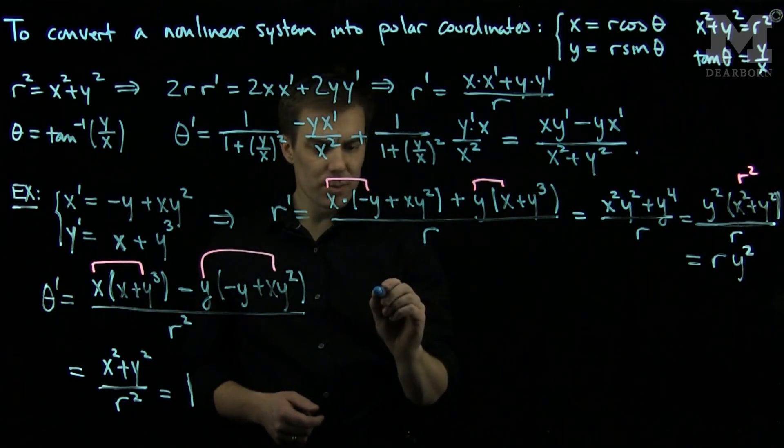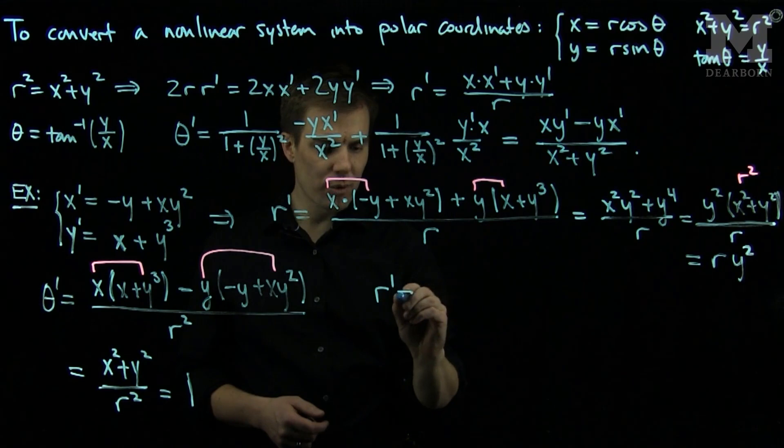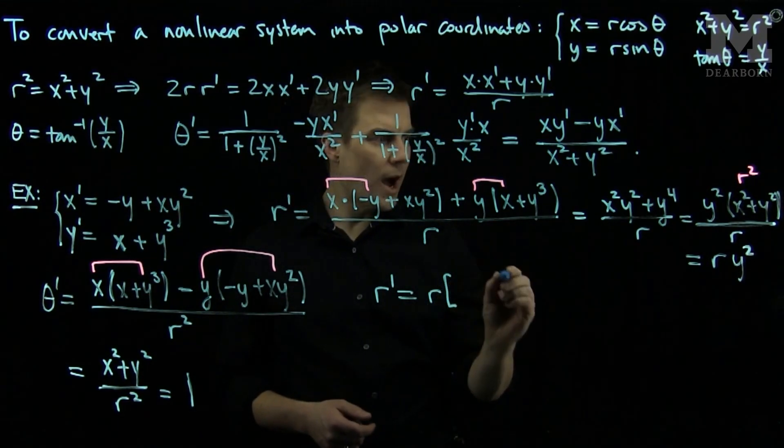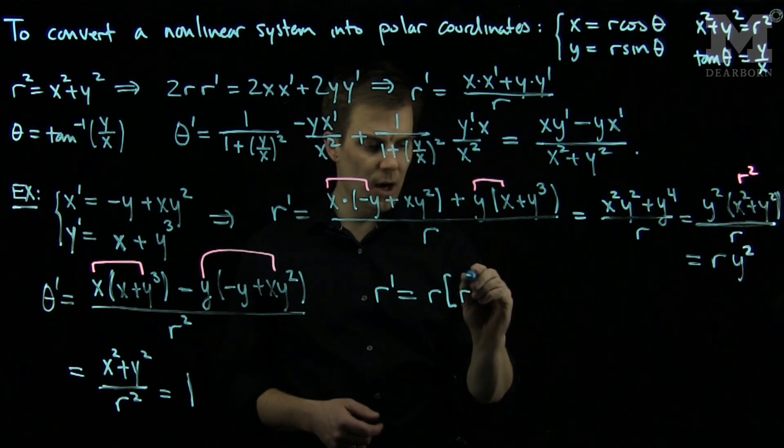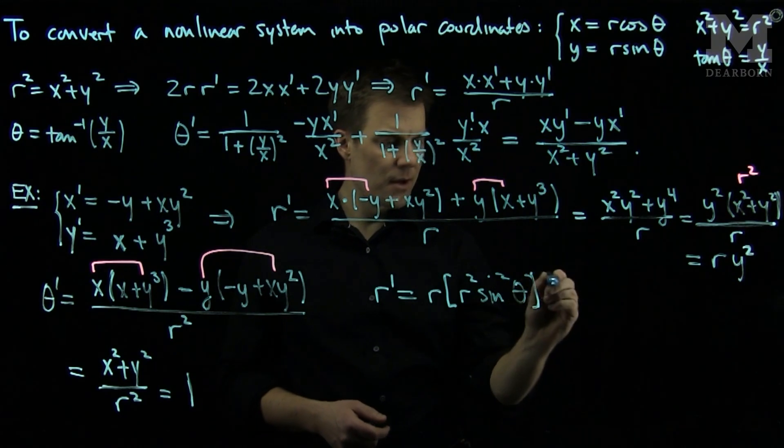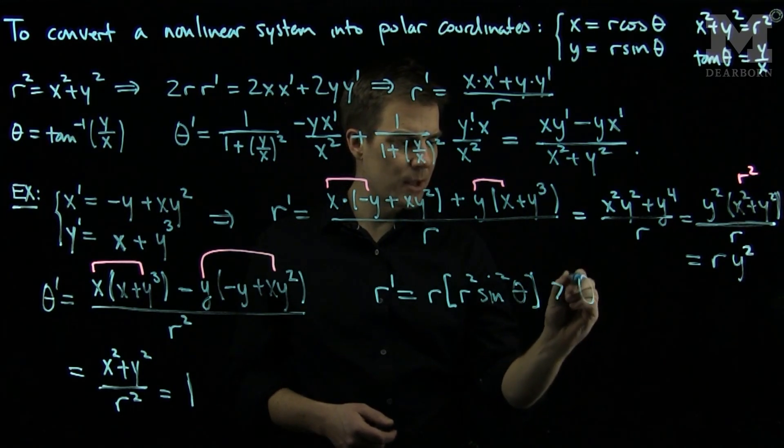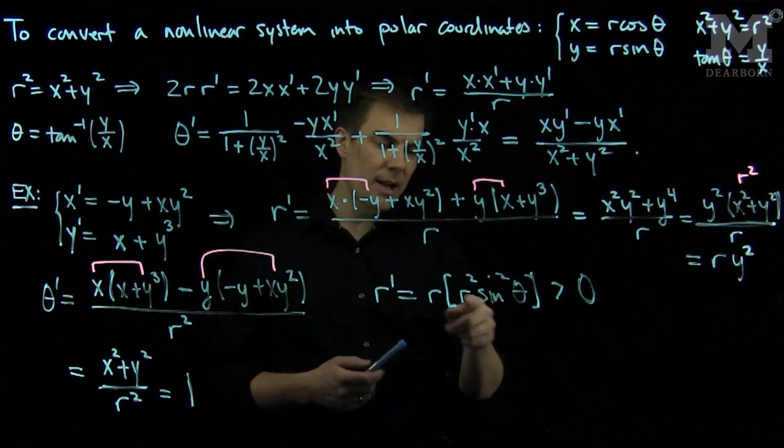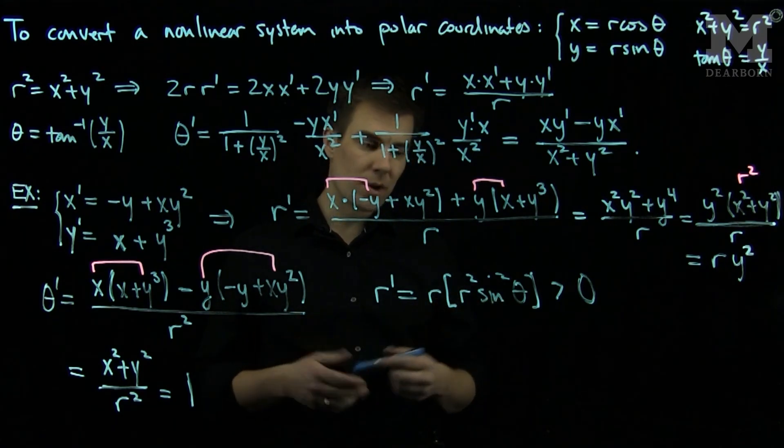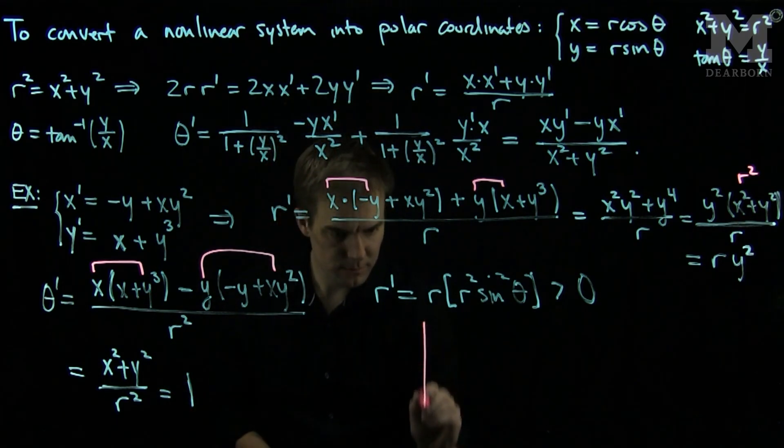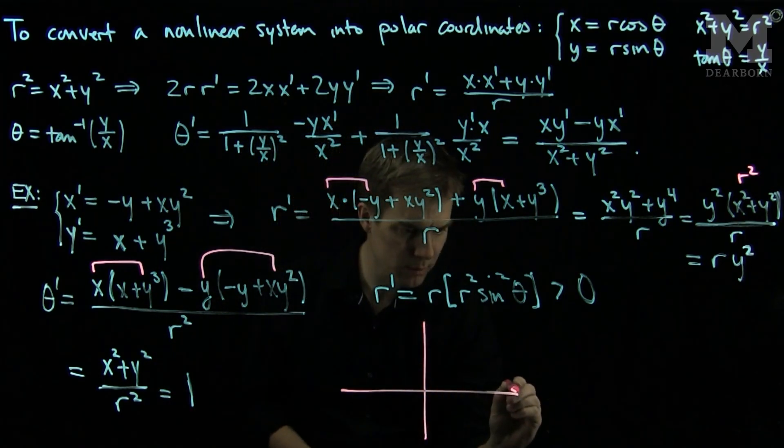If we continue to simplify our r prime equation, r prime will be r times y squared, and y is r sine theta, so this is r cubed sine squared theta. From this, we see that r prime is always greater than or equal to zero, because sine squared theta is positive and r cubed is positive since r is the radial variable.